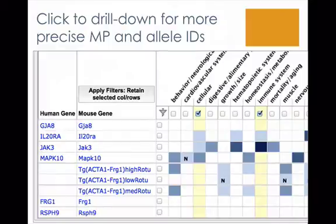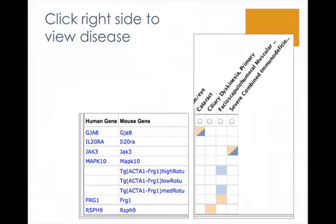Similarly, on the right side of the grid, clicking cells with data will reveal details of gene-disease associations. Gap junction 9 is an example of a gene associated with cataracts in both human and mouse, and four different alleles in the mouse have all been used as cataract disease models.